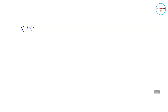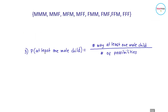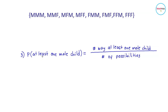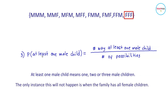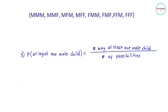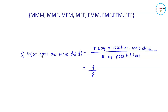Next, we want to find the probability of selecting a family with at least one male child. This can be computed by dividing the number of favorable outcomes by the number of possibilities. At least one male child means one, two, or three male children in a family. The only outcome where this cannot happen is when a family has all female children. So the number of ways is seven, divided by eight total possible outcomes.